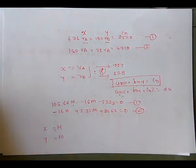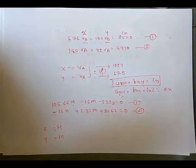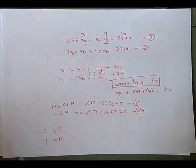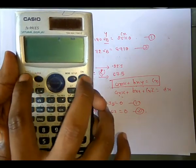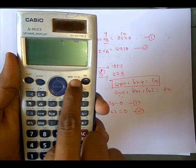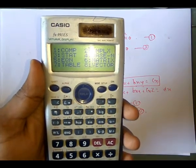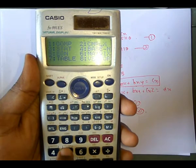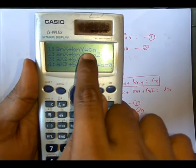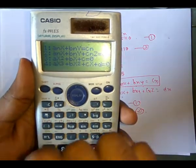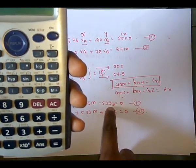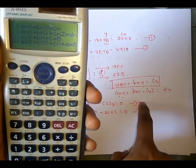Previously we used the 991ms; now I'll explain using the 991es. After clearing memory, press Mode and you'll see the Equation option is number 5 — press 5. This calculator shows directly that a_n·x plus b_n·y equals c_n, meaning the constant must be on the right side of the equals sign. So we need to rearrange our equations accordingly.